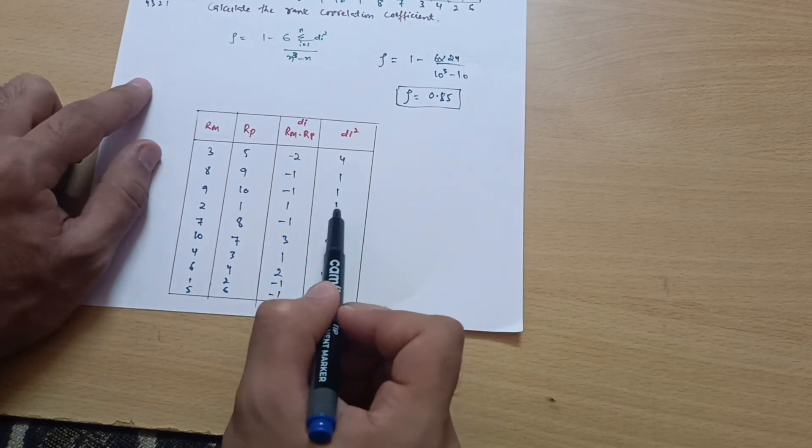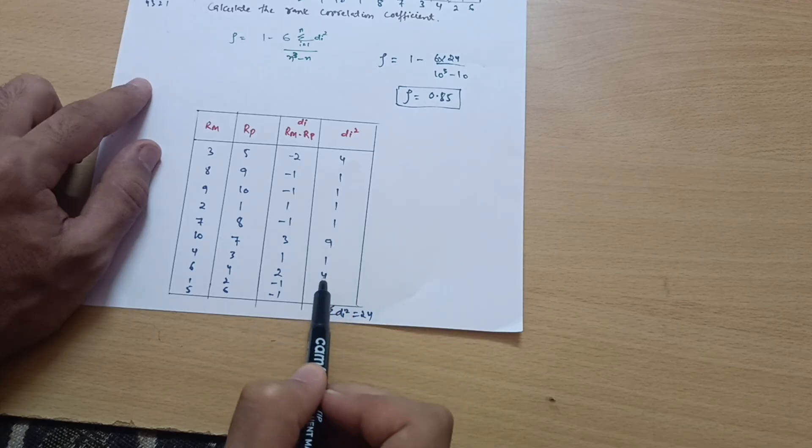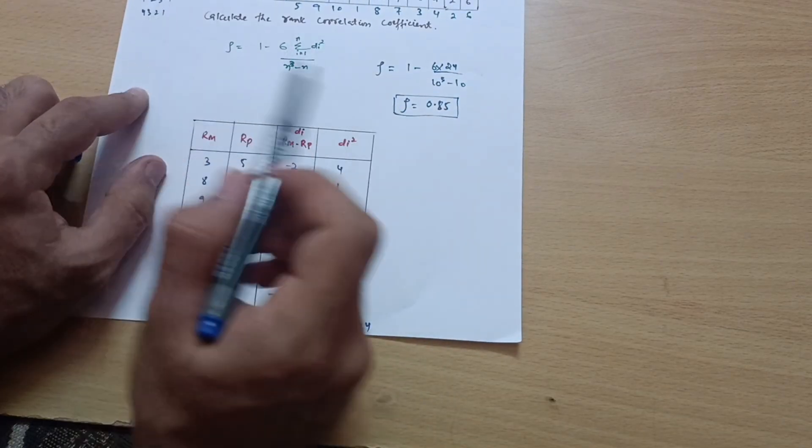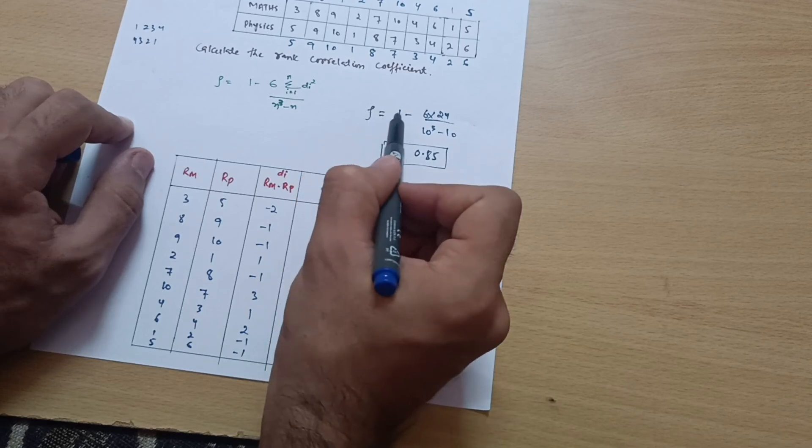Now just sum up these terms. You will get summation of di squared: 4 plus 1 is 5, 6, 7, 8, 8 plus 9 is 17, 18, 22, 23, 24. So summation of di squared you are getting 24.